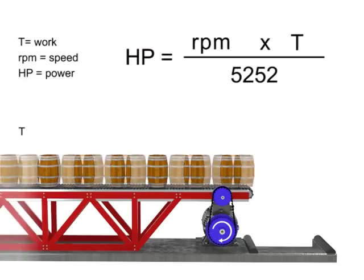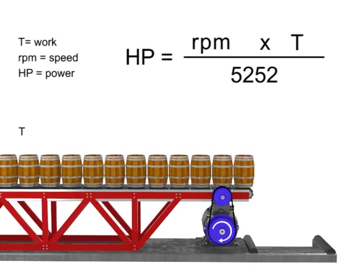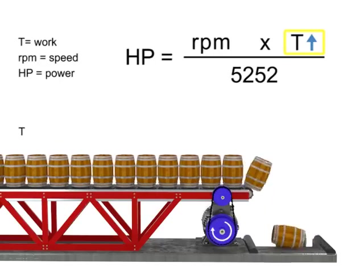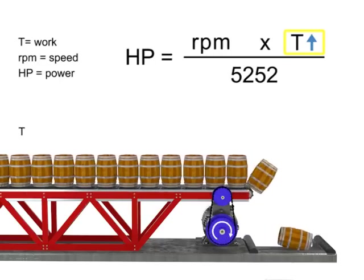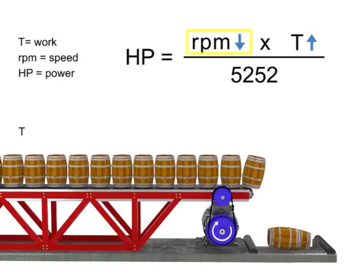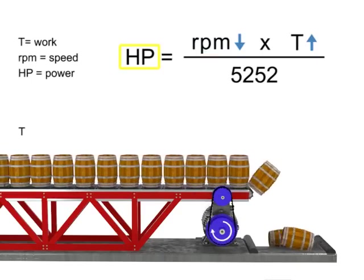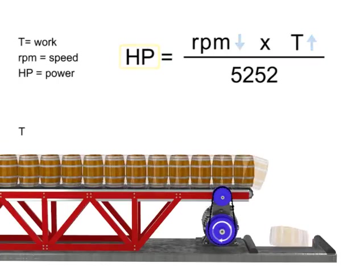Let's say we want the horsepower of our motor to remain constant but wish to increase the torque. If torque increases, the speed of the conveyor decreases so that the horsepower required of the motor remains constant. Similarly, the opposite is true.